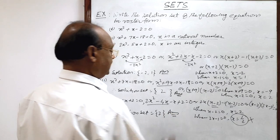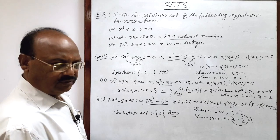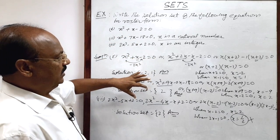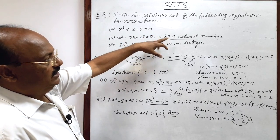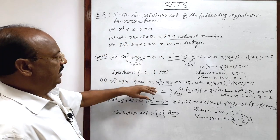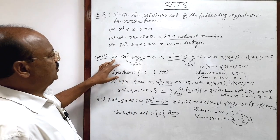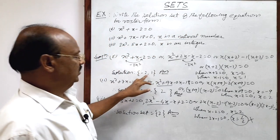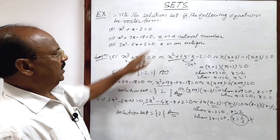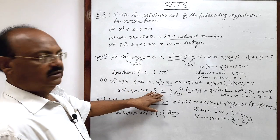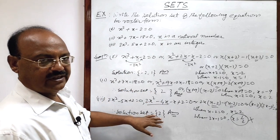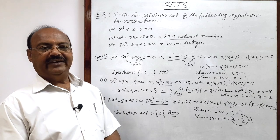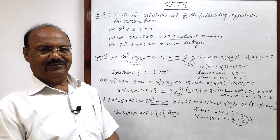So the solution set for the third question is {2}. You know how to solve quadratic equations, and after solving them we get the solution set. But you have to be careful about the conditions given. In the first question there is no condition, so we write both solutions: {-2, 1}. In the second and third questions, conditions are given, so we take values of x accordingly. Hope you will remain in touch with these videos and enjoy learning mathematics. Thank you very much. All the best.